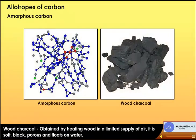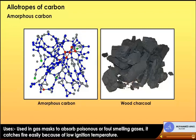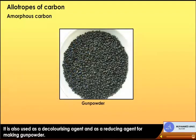Wood charcoal is obtained by heating wood in a limited supply of air. It is soft, black, porous and floats on water. Uses: used in gas masks to absorb poisonous or foul-smelling gases; it catches fire easily because of its low ignition temperature.